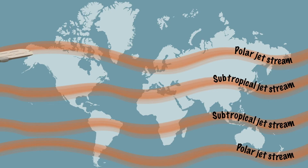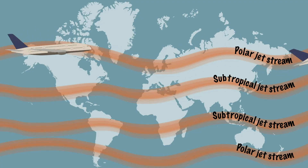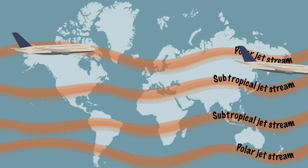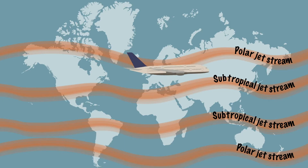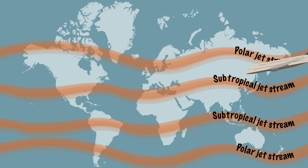Aircraft fly exactly at the height of the jet stream. If they move to the east they have tailwind and so they will fly much faster. Flights to the west often take longer for that reason, as the plane has a headwind.